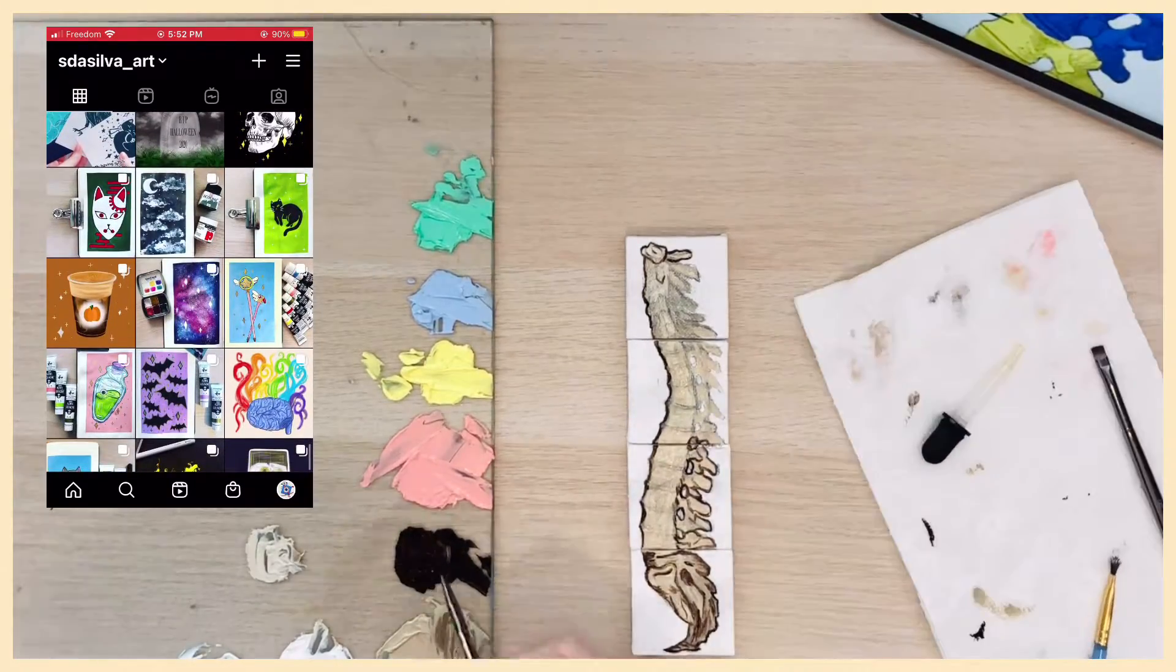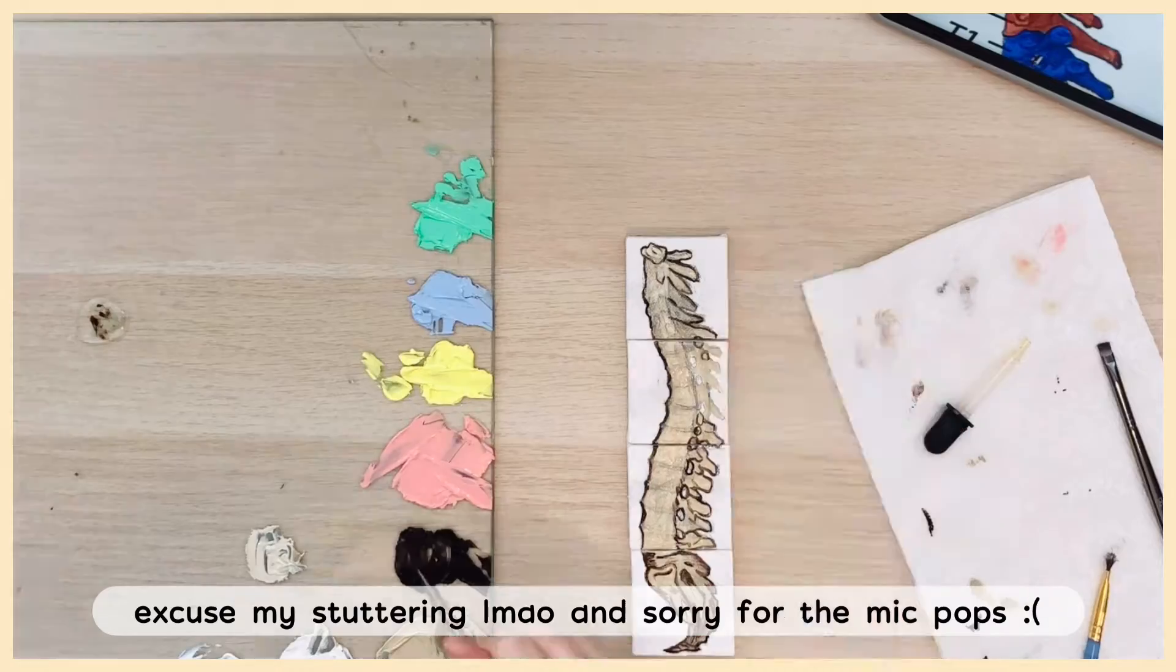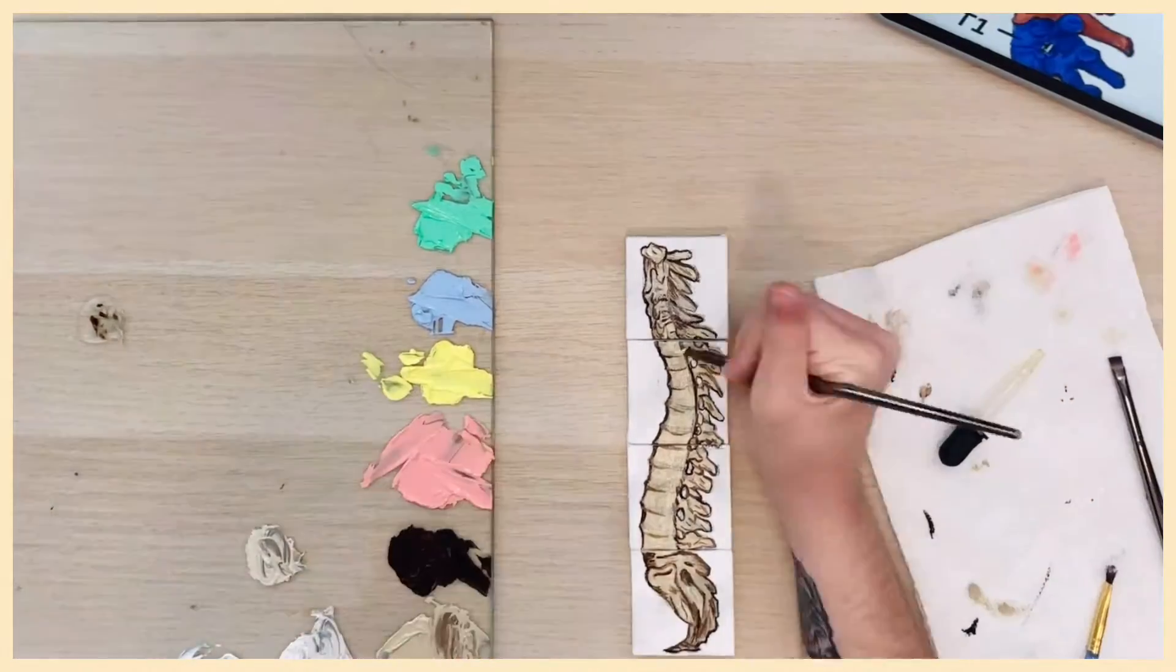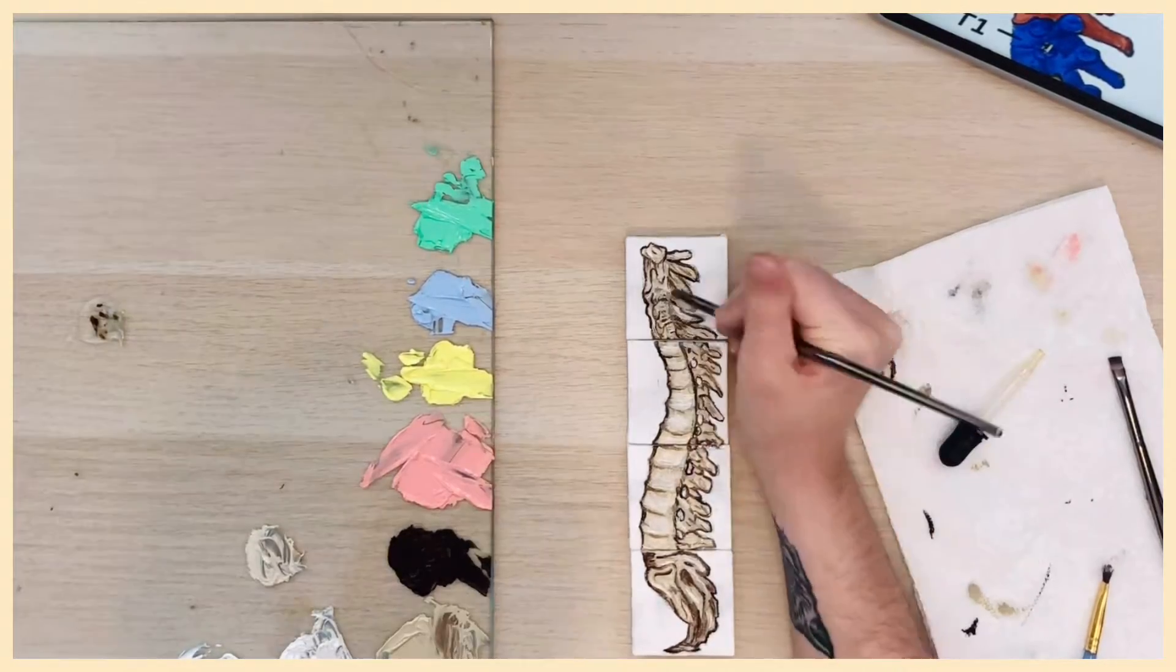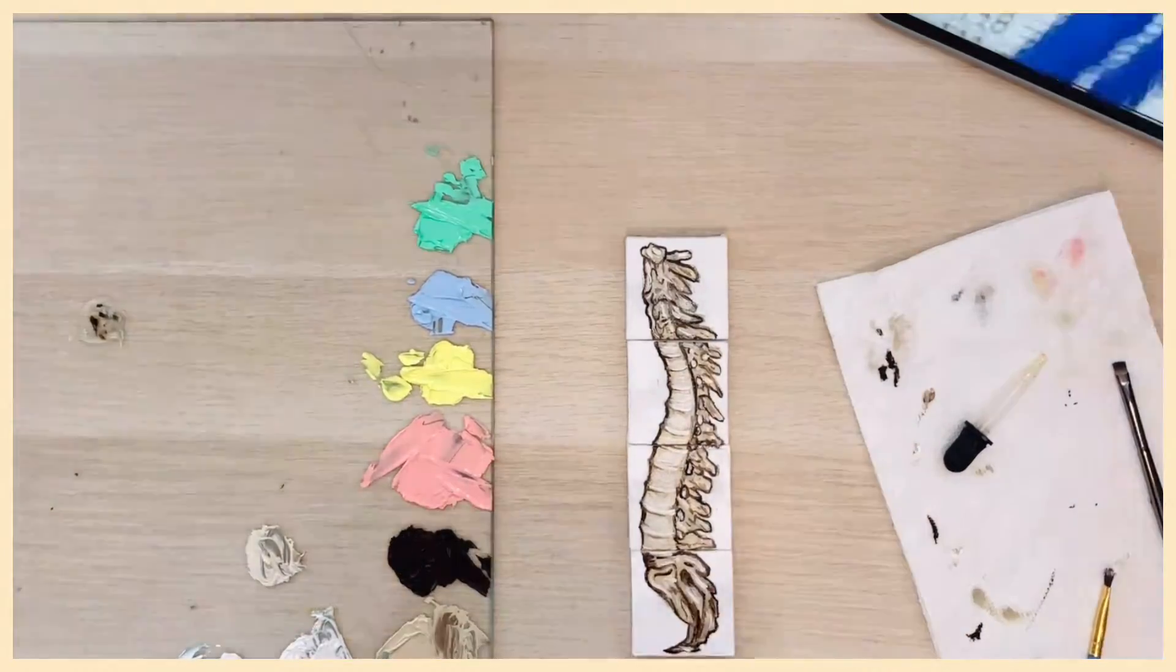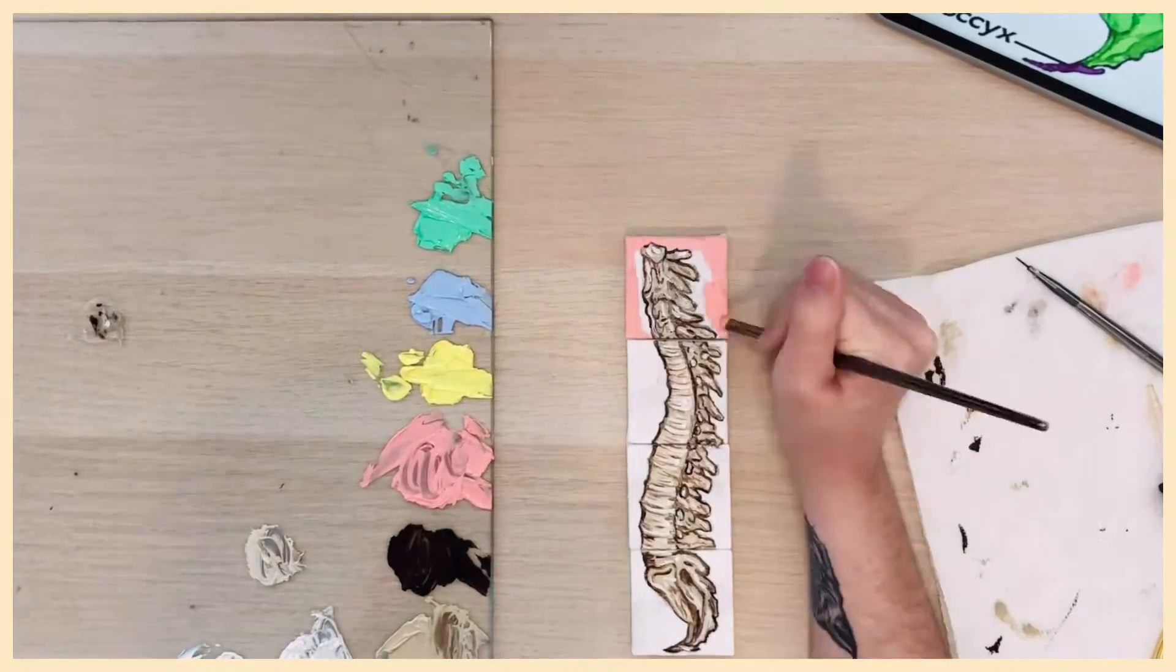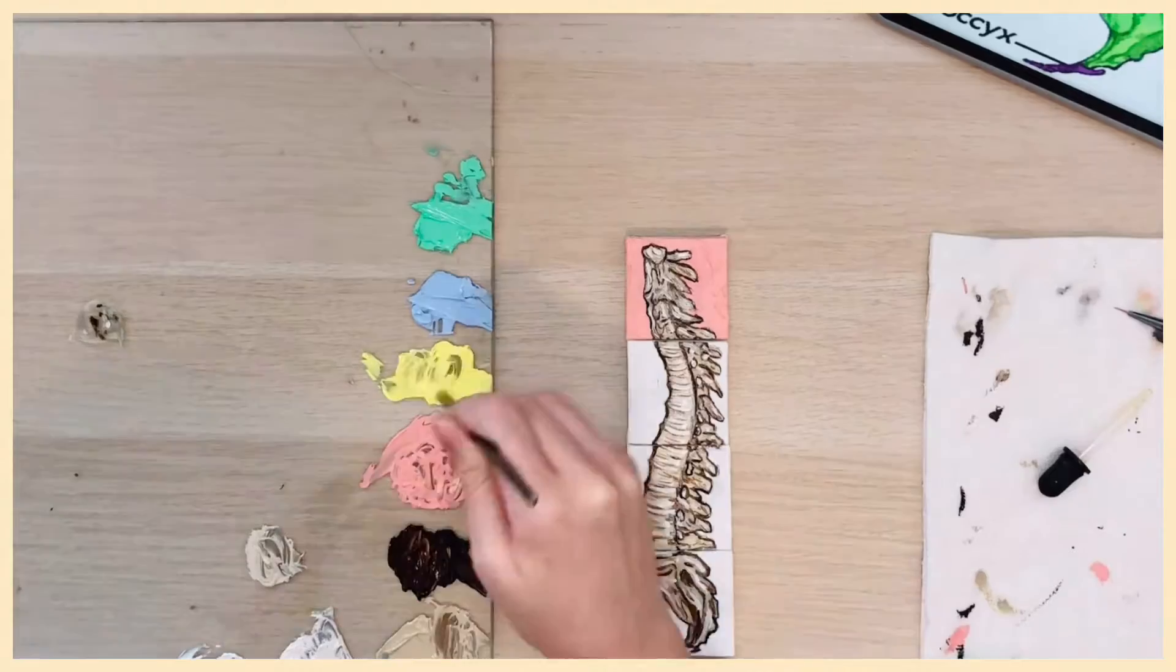This mini anatomy series I did on 24 2x2 mini canvases and they're all done in oil paint. I did a video with the rest of the speed paints in my previous video, so I will link that in the cards.